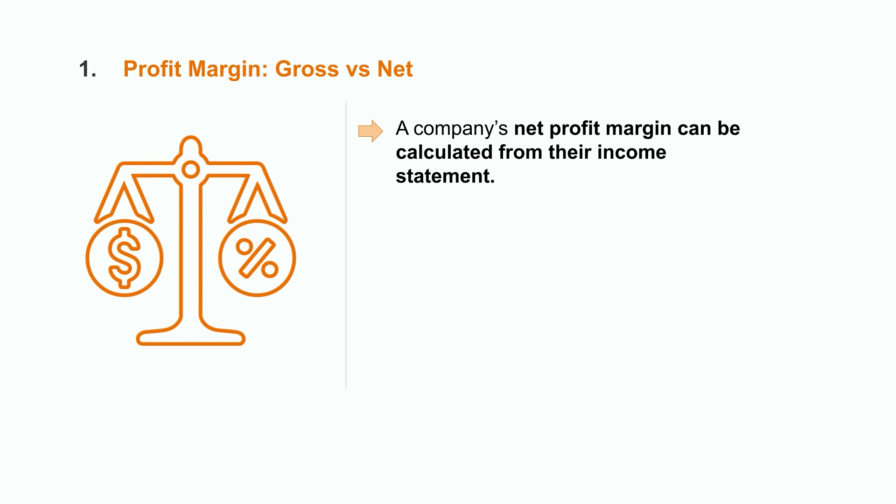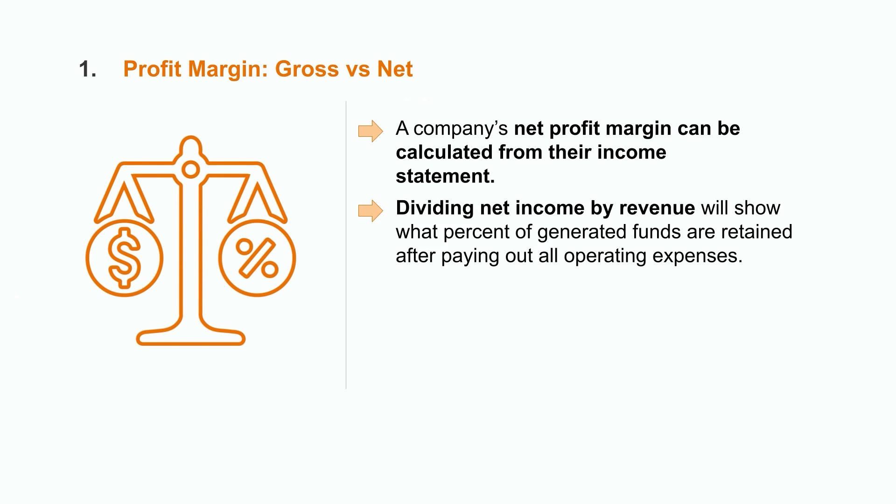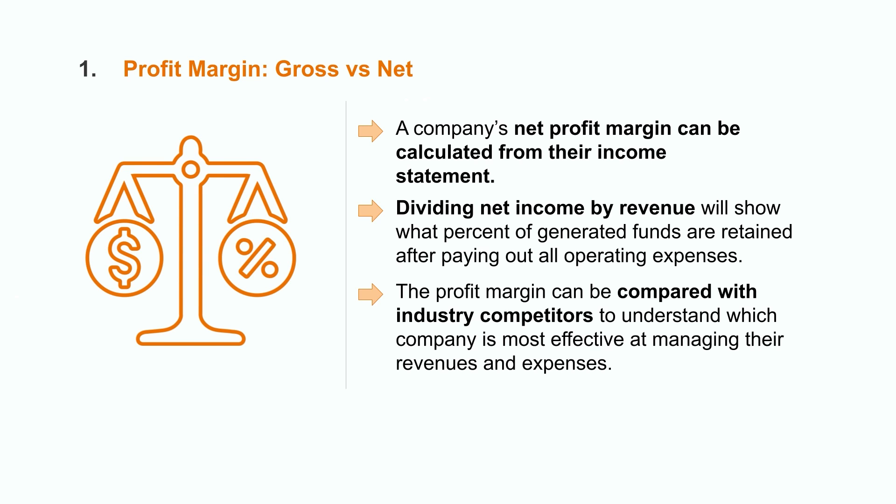For example, I can quickly calculate a company's profit margin by looking at their income statement and taking their net income divided by their revenue. This tells me what percent of the funds they generate they are keeping in their pockets after paying out all their operating expenses. For example, if a company has a 30% profit margin, this means that they are keeping 30 cents of every dollar they sell in their pockets. Once we have this profit margin figure, we can compare it to other competitors in the same industry to get a sense of which company is most effective when it comes to managing their revenues and expenses.